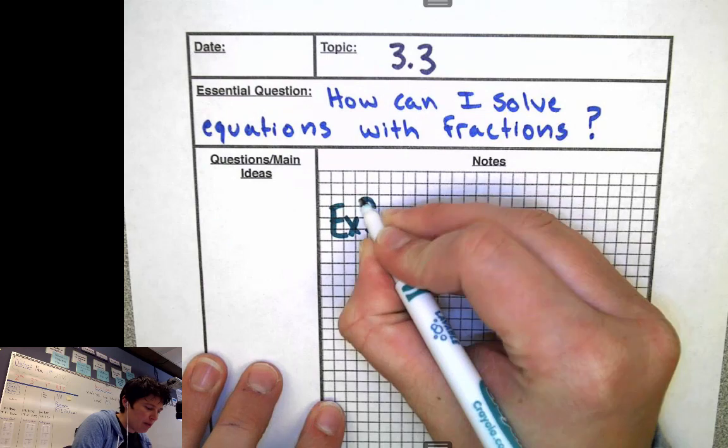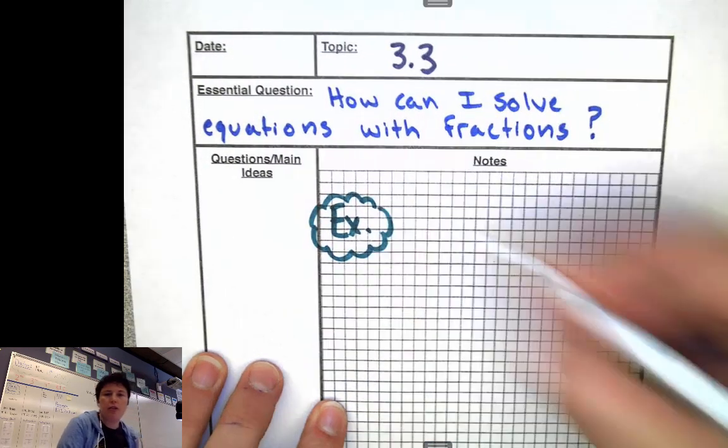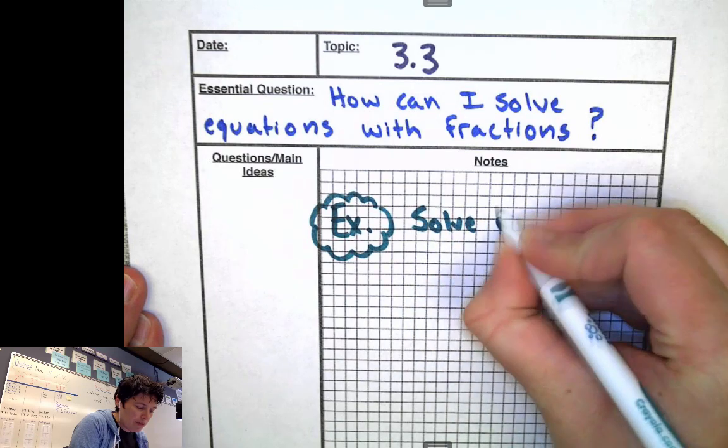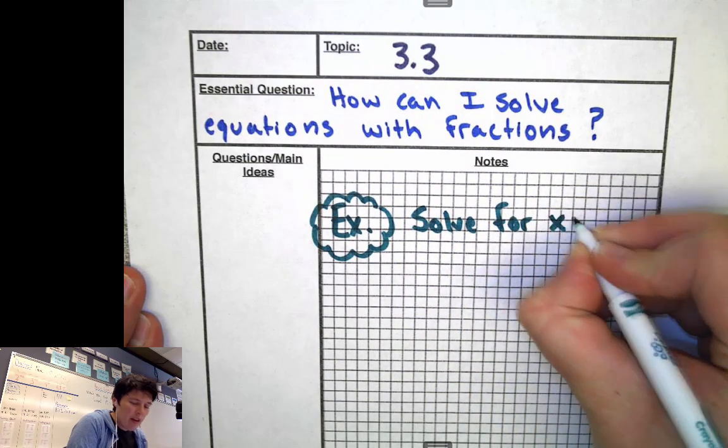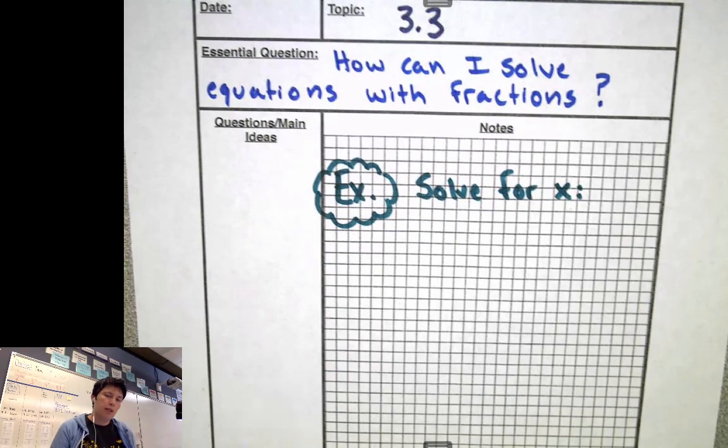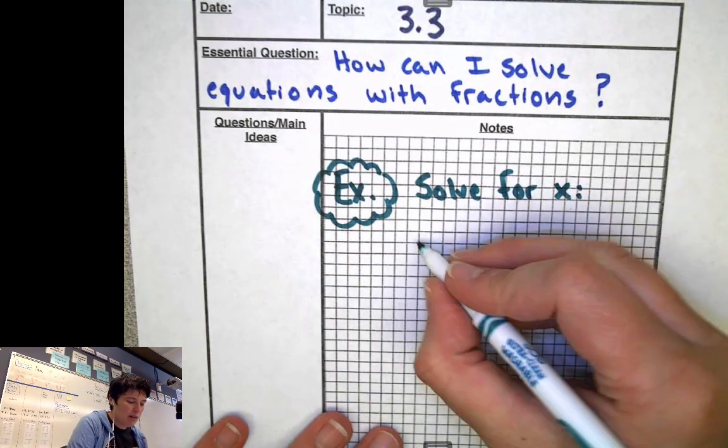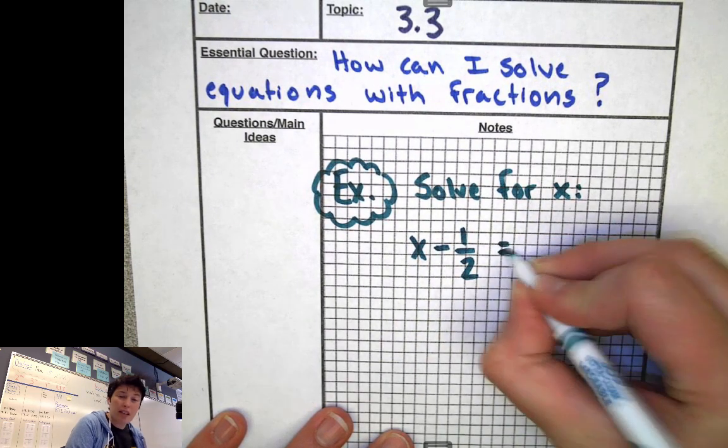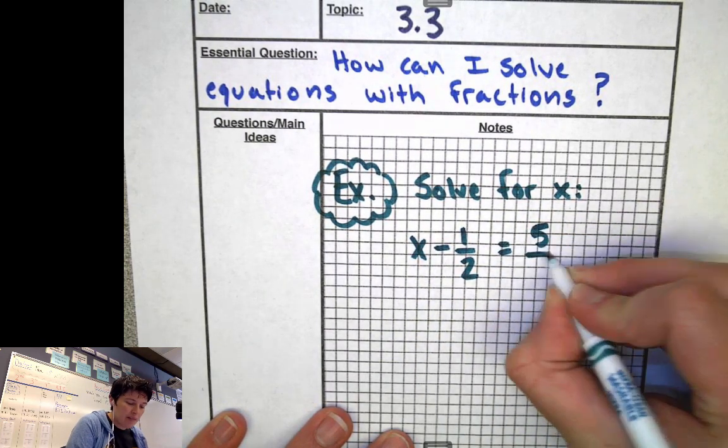And our first example, what we're going to do is we are going to solve for x. So I've got some sort of mystery number, which I'm calling x. I don't know what the number is, but I know if I take x, and I subtract one half, I end up getting five sevenths as an answer.